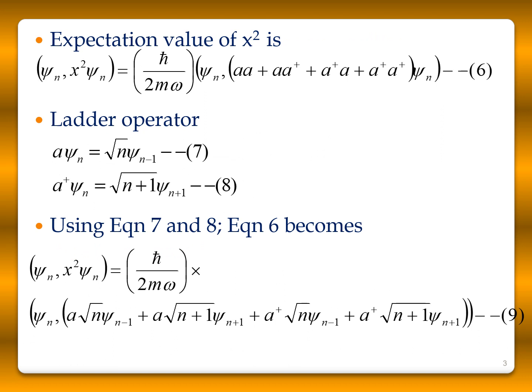The expectation value of x² is the inner product ⟨ψₙ|x²|ψₙ⟩. Substituting the value of x², it is (ħ/2mω)⟨ψₙ|(aa + aa† + a†a + a†a†)|ψₙ⟩. We know that the ladder operator a acting on ψₙ gives √n · ψₙ₋₁, and a† acting on ψₙ gives √(n+1) · ψₙ₊₁.